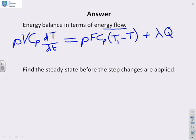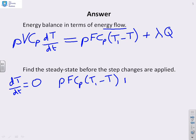What do we do next? Well, before we start, we want to find the steady state. So what's happening before we apply any step changes to T_i or to Q? So in steady state, we've got dT/dt equals 0. So if I take that, then what I've got is ρFCp(T_i - T) + λQ = 0.